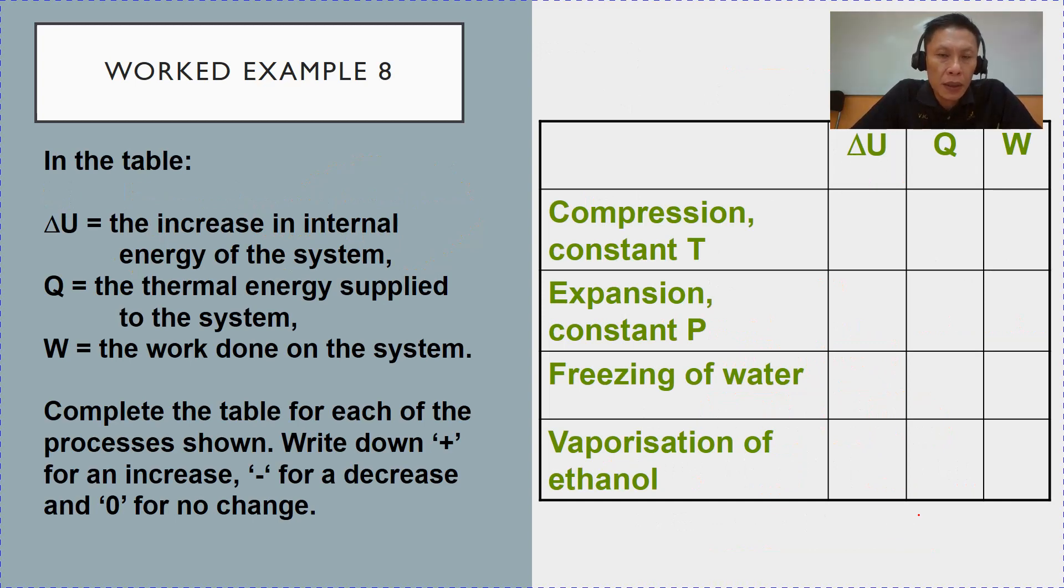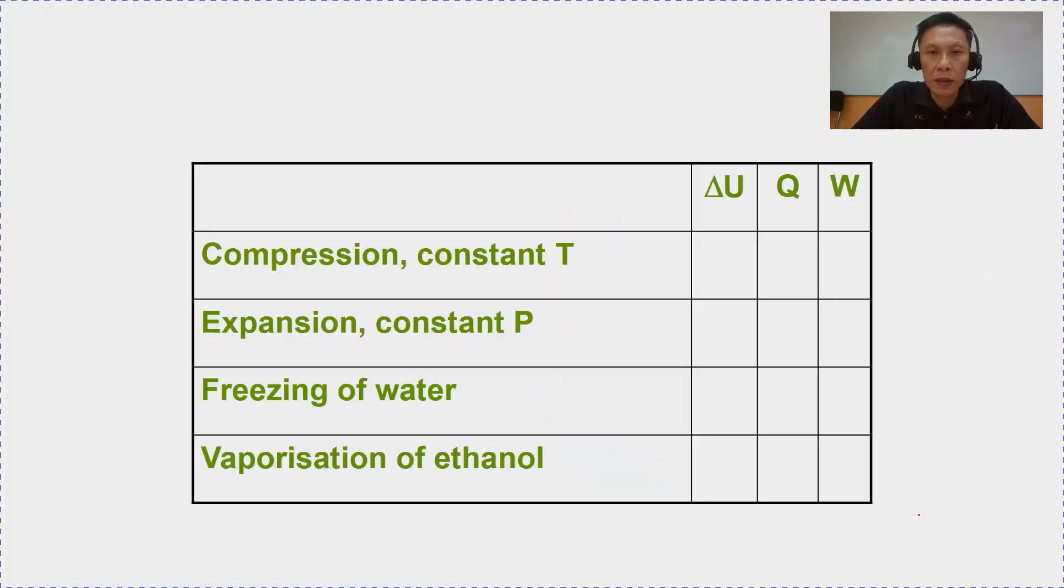Last example, example 8, we are given a table. By now, you have seen this table before, the three familiar columns. And then, row-wise, you have four different processes. Your job is to complete the table by indicating a positive sign or a negative sign, where a positive sign represents an increase, a negative sign represents a decrease, and you can label zero if there is no change. So, how do we complete given the information of the four processes?